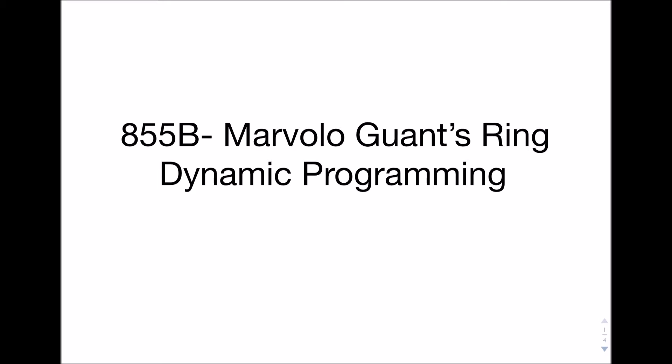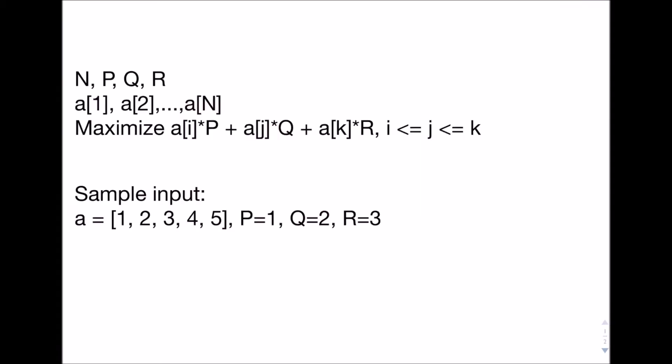Let's consider the problem A55B, Marvolo-Guance-Rink. In this problem, we're given n, p, q, and r, and we're also given an array of n integers. Our goal is to maximize a[i] times p plus a[j] times q plus a[k] times r, such that i is less than or equal to j is less than or equal to k.